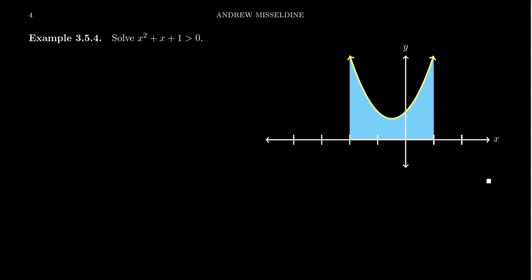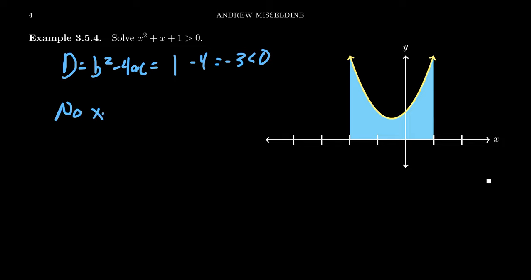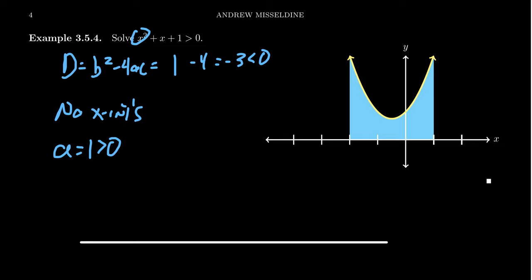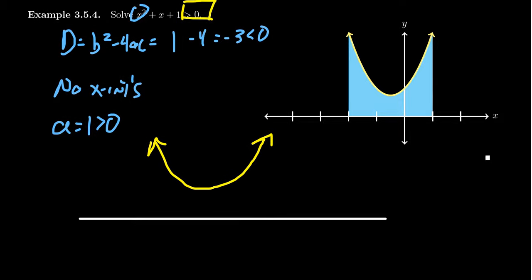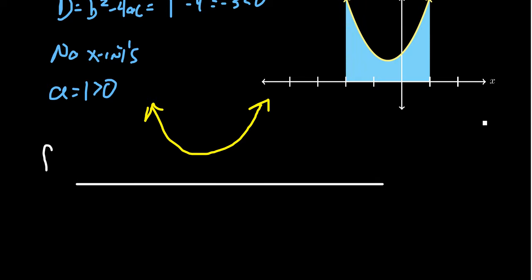Let's look at one last example: x squared plus x plus 1 is greater than 0. In this situation, the discriminant b squared minus 4ac gives us 1 minus 4, which is negative 3 — it's negative. This means there are going to be no x-intercepts on the graph. Since the leading coefficient is positive, the graph lives entirely above the x-axis and never hits it. If we want things greater than 0 — above the x-axis — that's everything. Our solution is all real numbers. And if we change it to greater than or equal to 0, there are no x-intercepts to include, so it's still all real numbers.